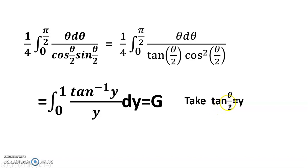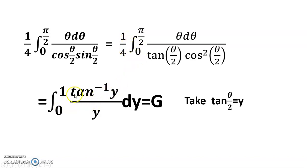So theta/2 equals arctan(y). After all substitutions and cancellations, we arrive at the integral from 0 to 1 of arctan(y) divided by y dy, evaluated at the limits giving the value G. This is indeed the Catalan constant G. I hope it is clear for everyone.